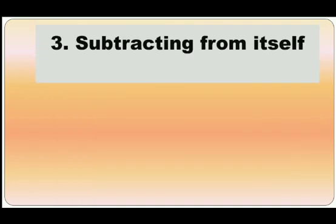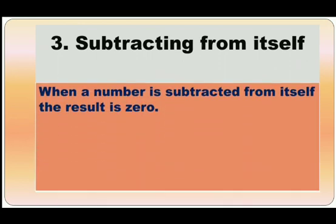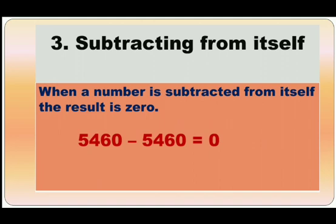Third, subtracting from itself. When a number is subtracted from itself, the result is 0. Here, when the number 5460 is subtracted from the number 5460, we get the number 0. It means whenever two same numbers are subtracted, we always get the number 0.